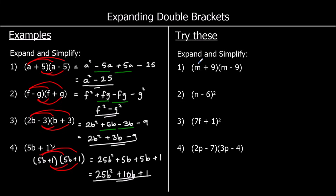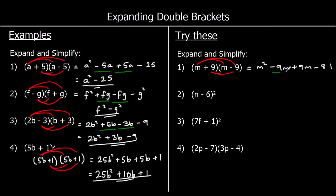Multiplying both terms in the first bracket by both in the second. m times m is m squared. m times negative nine is negative 9m. Nine times m is 9m. And positive nine times negative nine is negative 81. Collecting like terms: negative 9m plus 9m is zero, so we've got m squared minus 81. That's the difference of two squares.